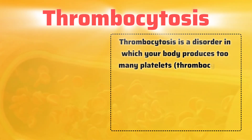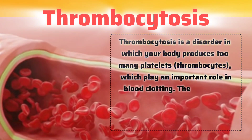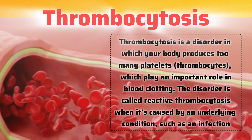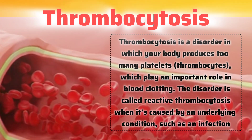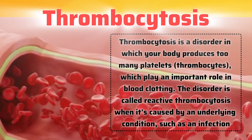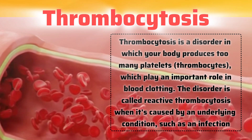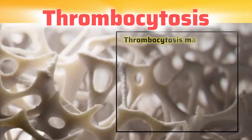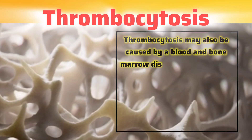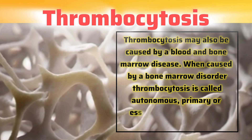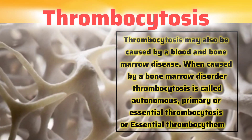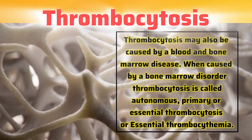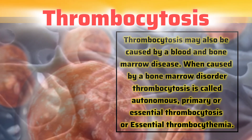Thrombocytosis is a disorder in which your body produces too many platelets — thrombocytes — which play an important role in blood clotting. The disorder is called reactive thrombocytosis when it's caused by an underlying condition, such as an infection. Thrombocytosis may also be caused by a blood and bone marrow disease. When caused by a bone marrow disorder, thrombocytosis is called autonomous, primary, or essential thrombocytosis, or essential thrombocytemia.